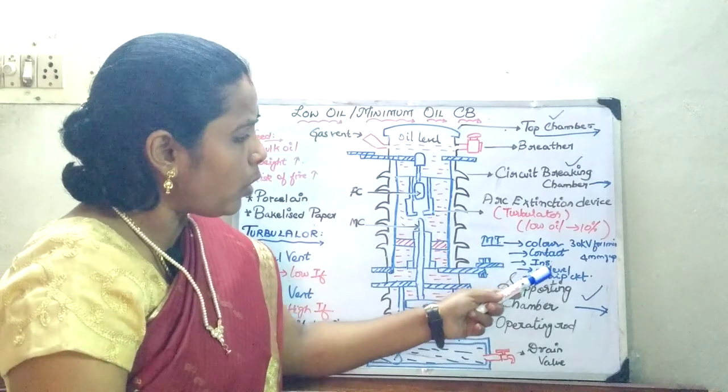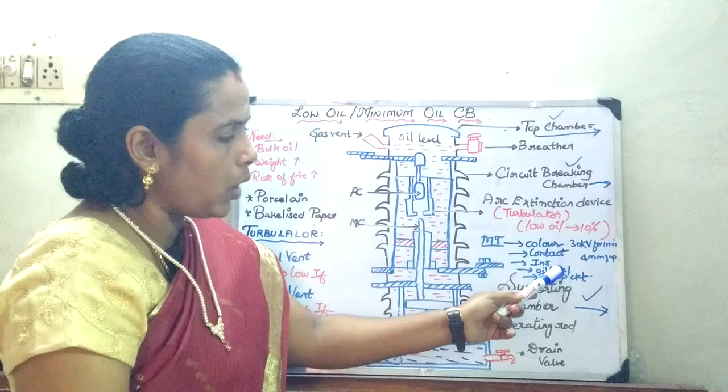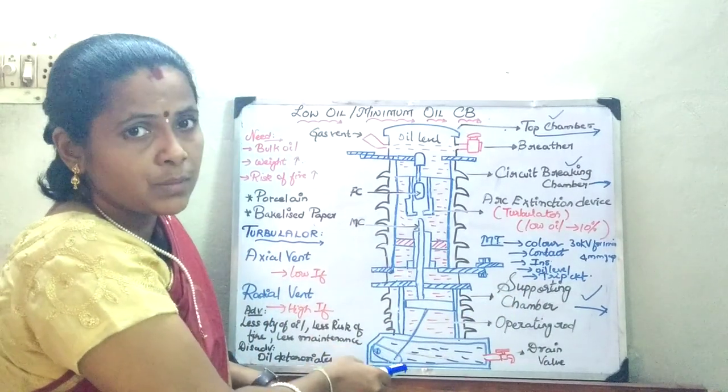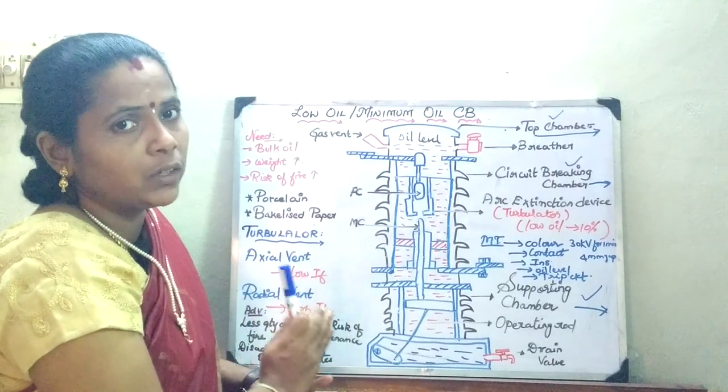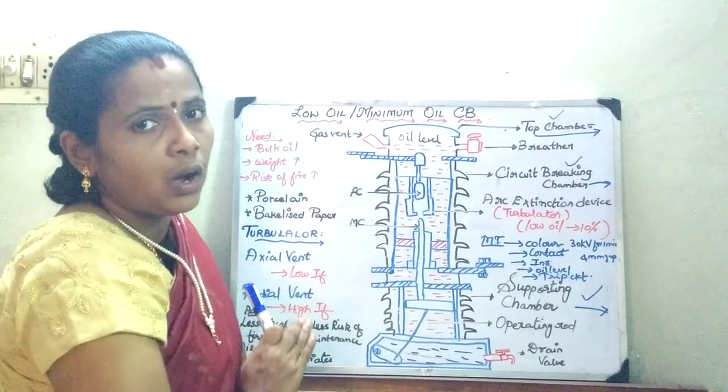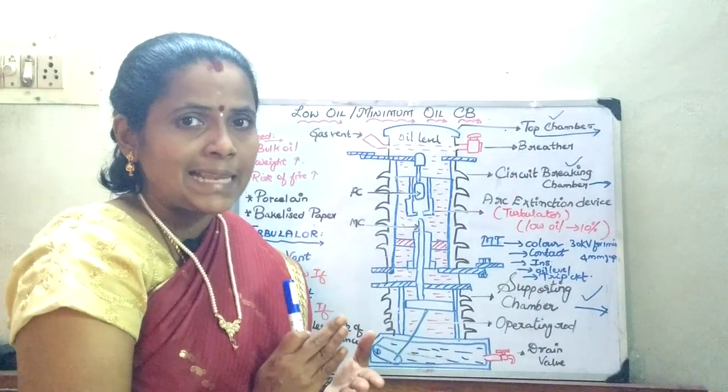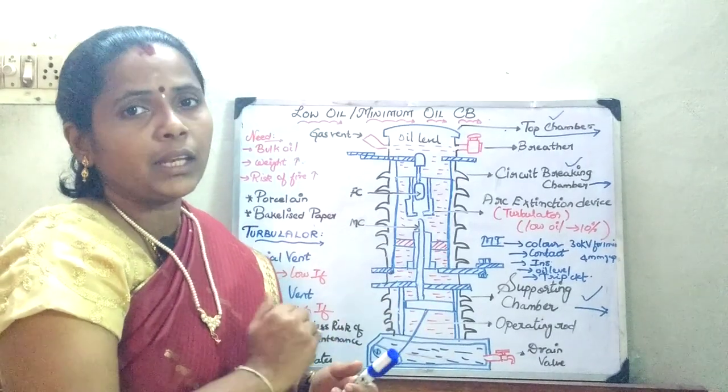Now you have to also check the outer insulation. Then and there you have to check the oil level also, and you should also take care of the other dripping mechanisms associated with it. So the maintenance is quite costly in case of oil circuit breaker. But the main advantage is that it uses less amount of oil and less risk of fire.